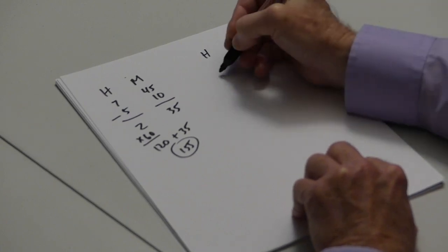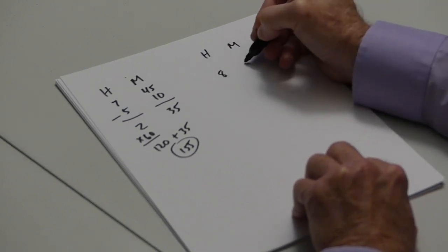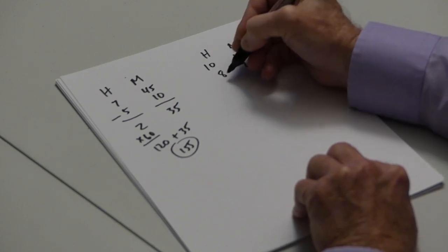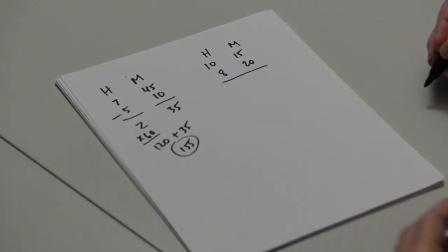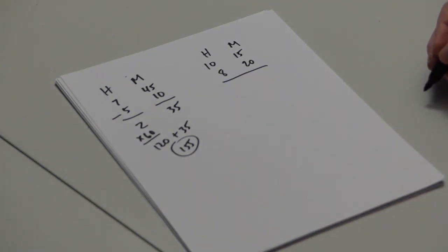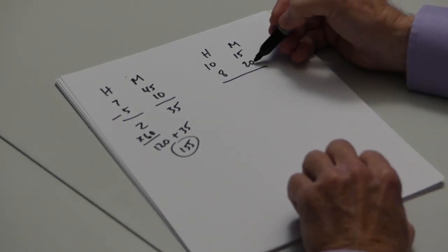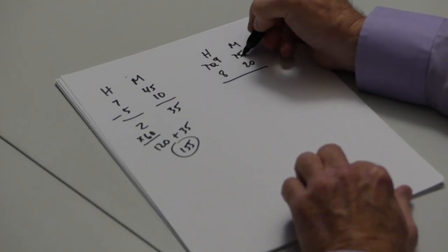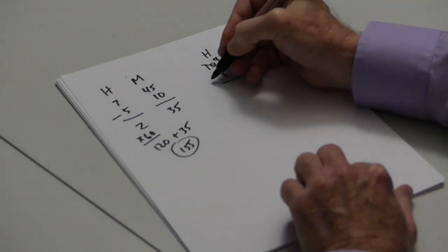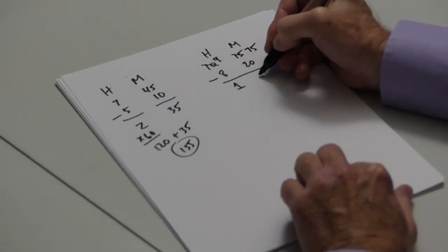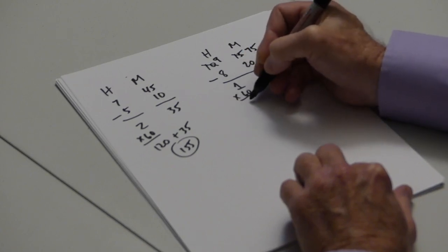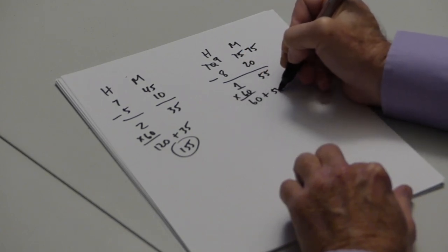For the second interval that began at 8.20 and ended at 10.15, we have a problem. Because the way we did this in school, we were taught we can't take 20 from 15, so we have to borrow an hour and add the 60 minutes here. And now we can subtract and get 1 hour and 55 minutes. That's 60 plus 55, or 115 minutes.